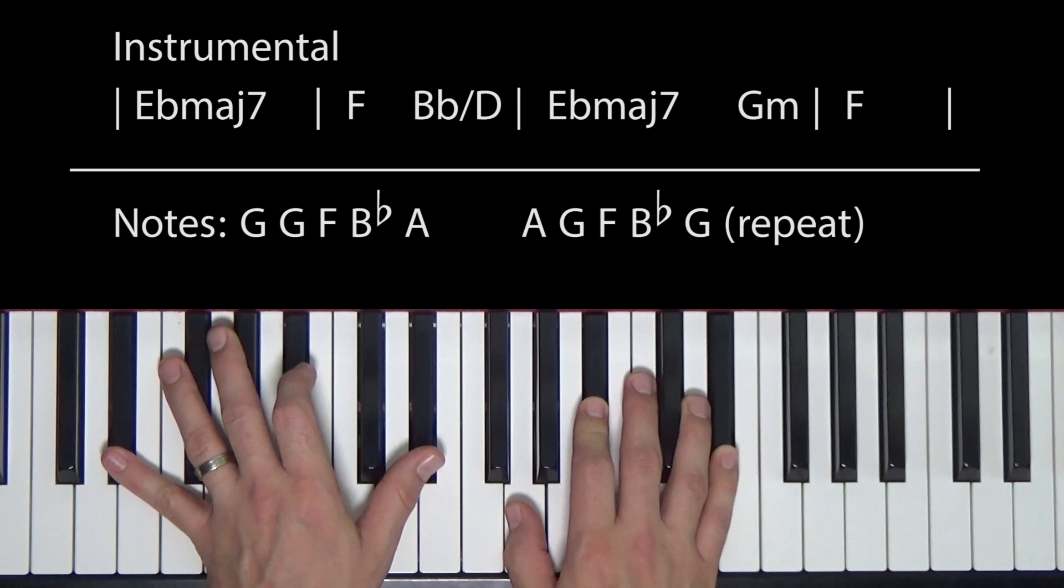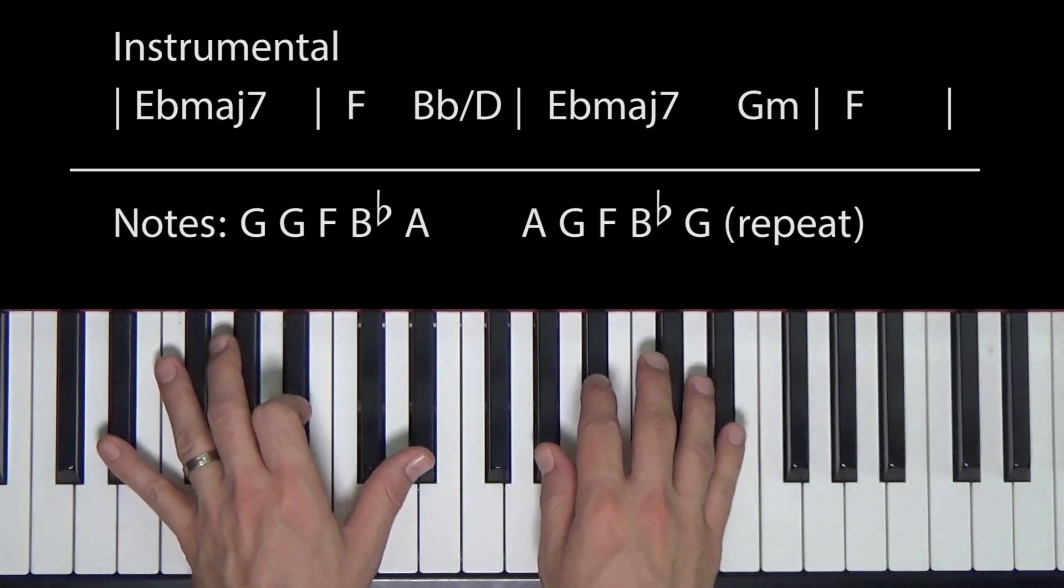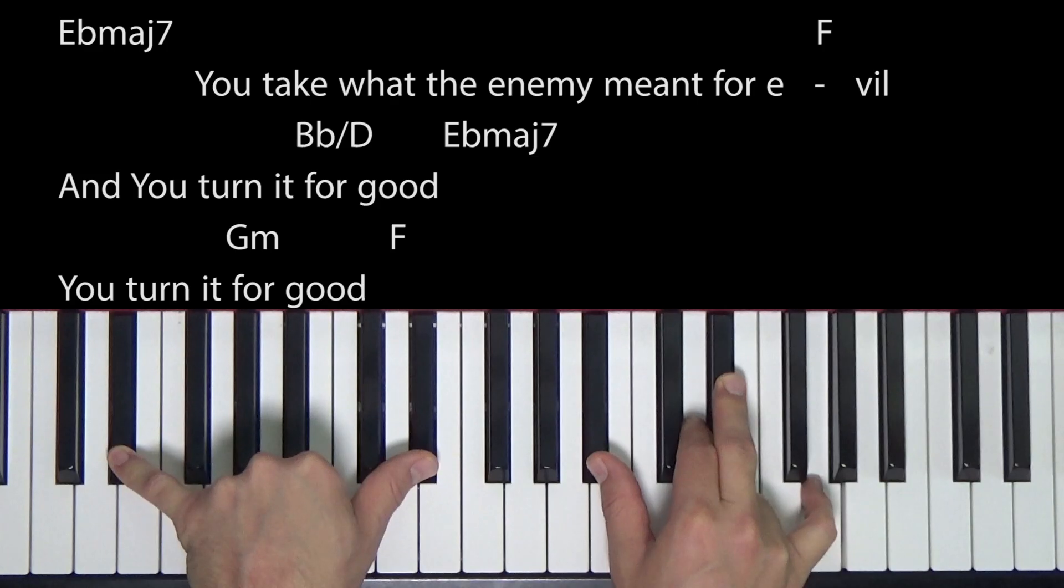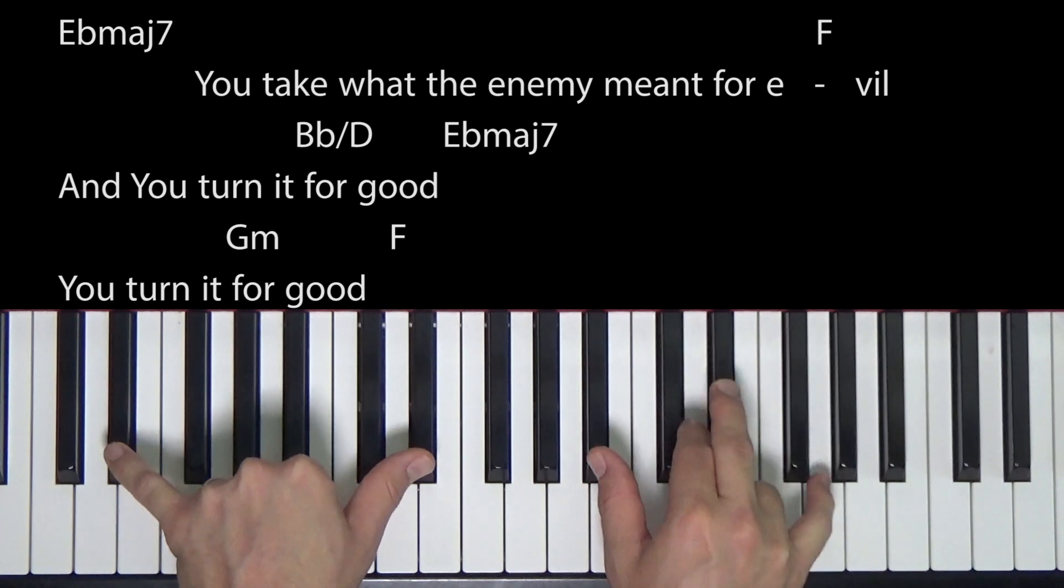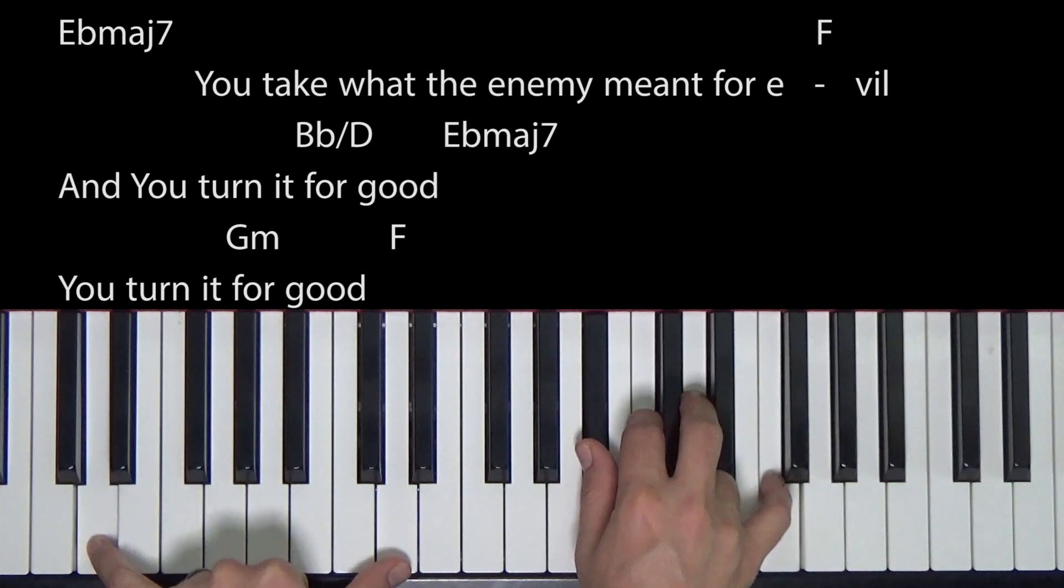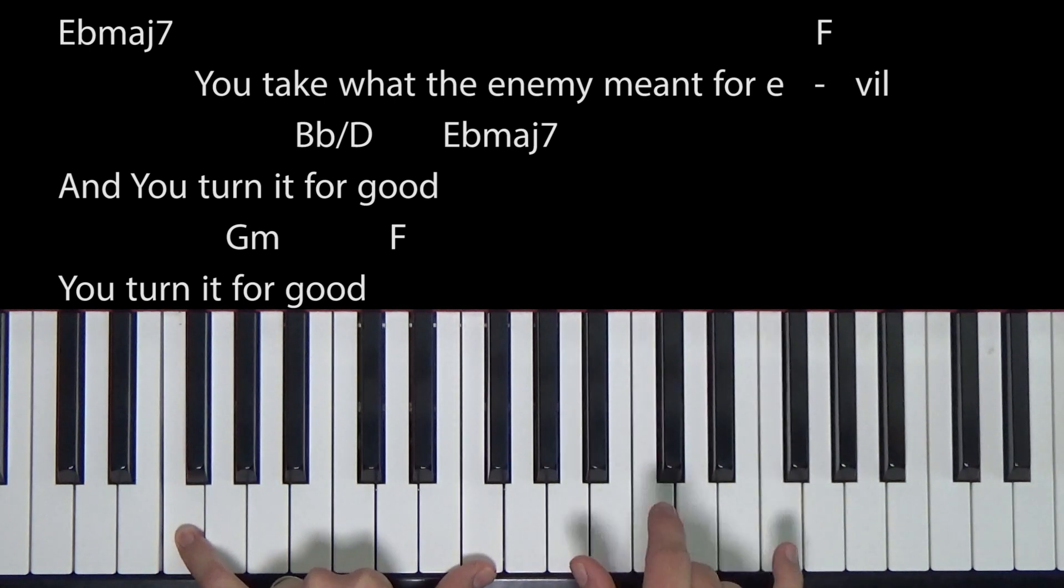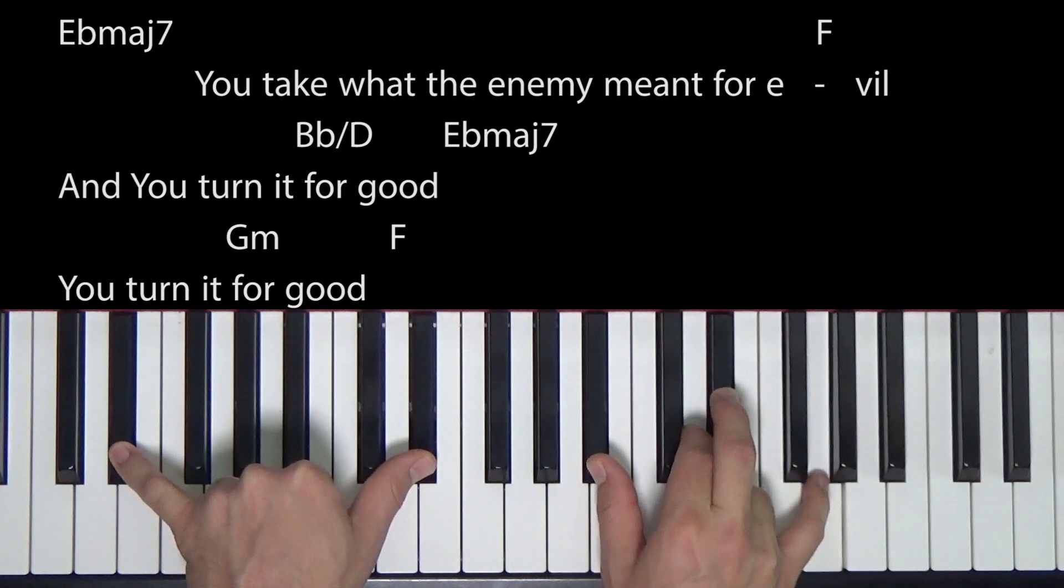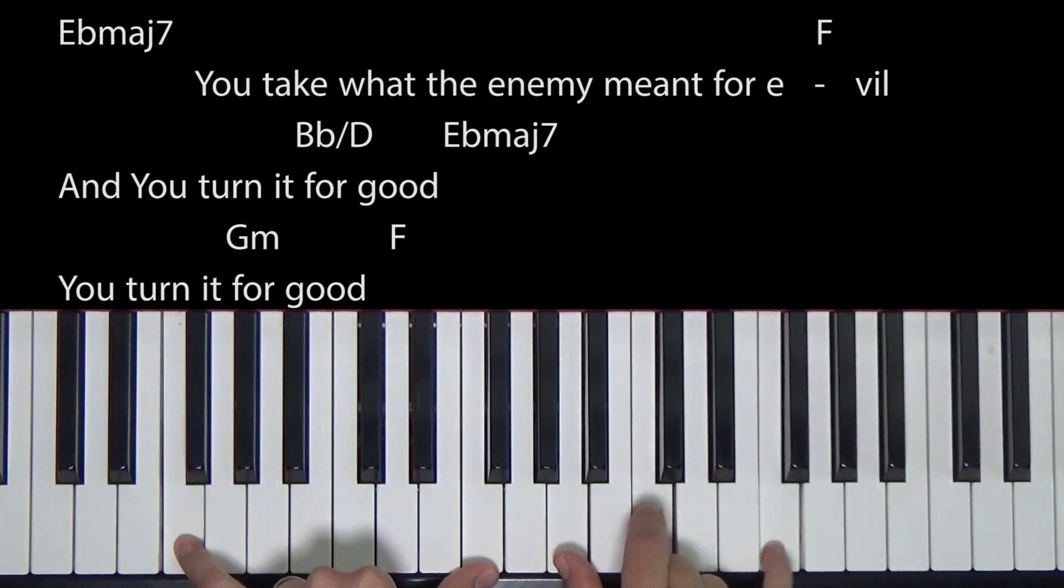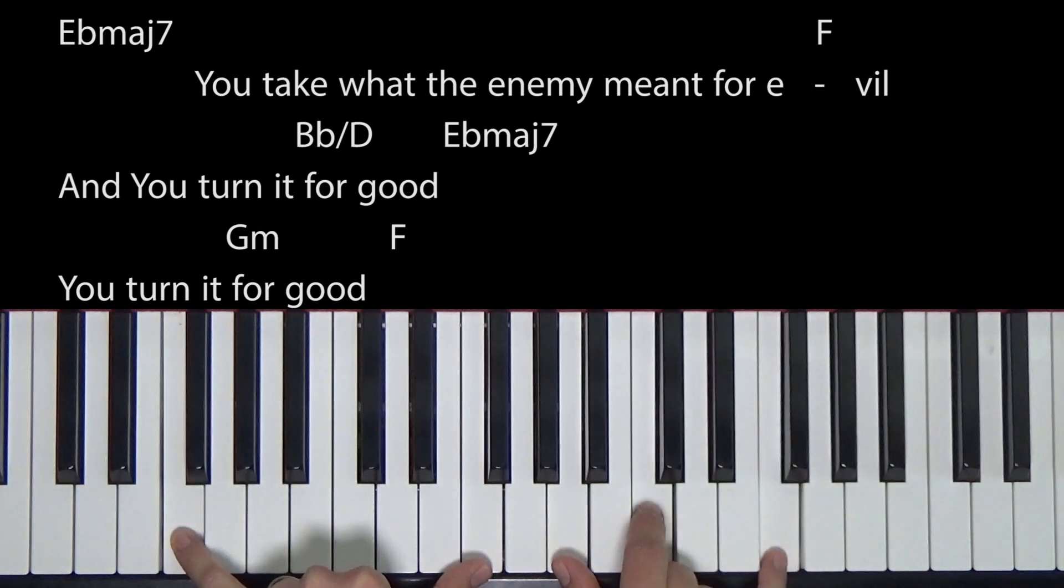If you want to work out being able to do that and sing at the same time through the bridge, more power to you. You could do it if you put enough time. But if not, we'll just play chords. So chords we already know. E flat major seven at the bridge. Two, three, four. You take what the enemy meant for evil and you turn it for good. Turn it for good. You take and you take what the enemy meant for evil and you turn it for good. You turn it for good. Beautiful. Beautiful.